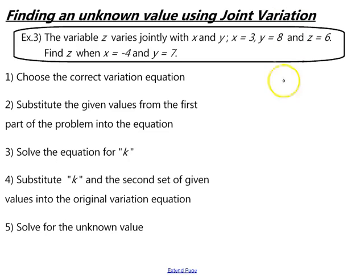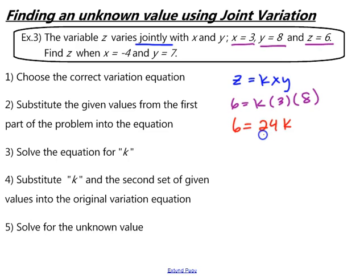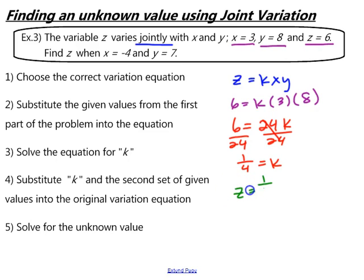We follow that same idea, this time using joint variation. A new variable z is introduced, and it varies jointly with x and y. The equation we begin with is z equals kxy. We find k using the given values: x equals 3, y equals 8, and z equals 6. Substituting those in, we get 6 equals k times 3 times 8, which is 24k. Dividing both sides by 24 gives k equals one-fourth. So the equation relating the variables is z equals one-fourth times x times y.